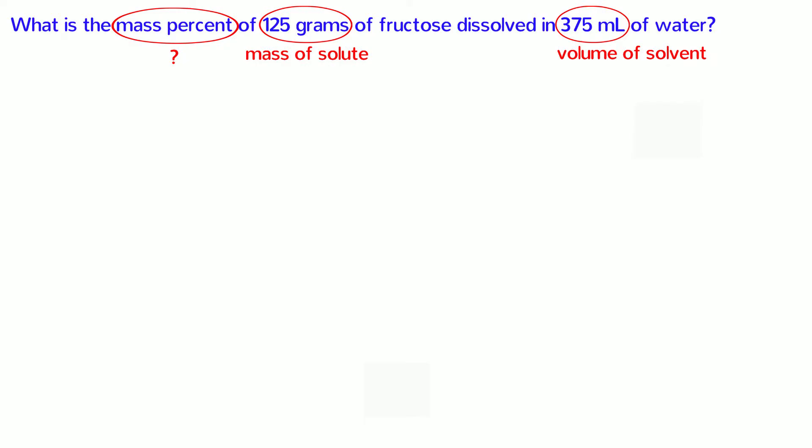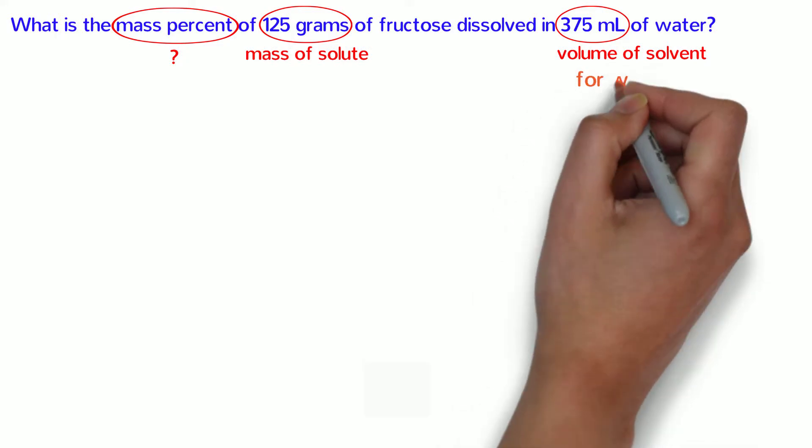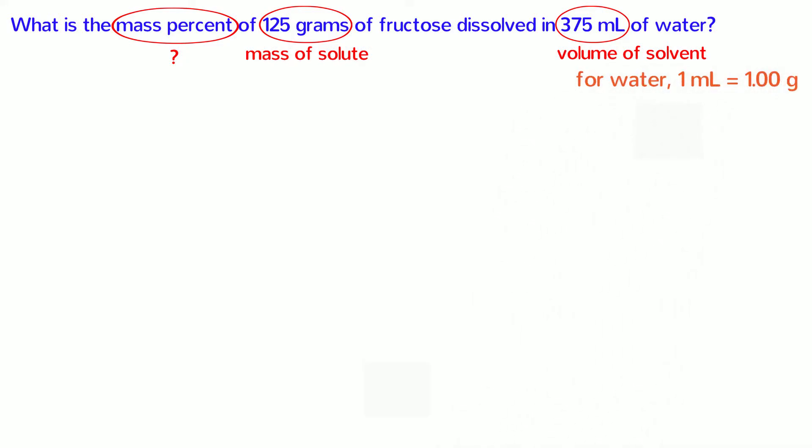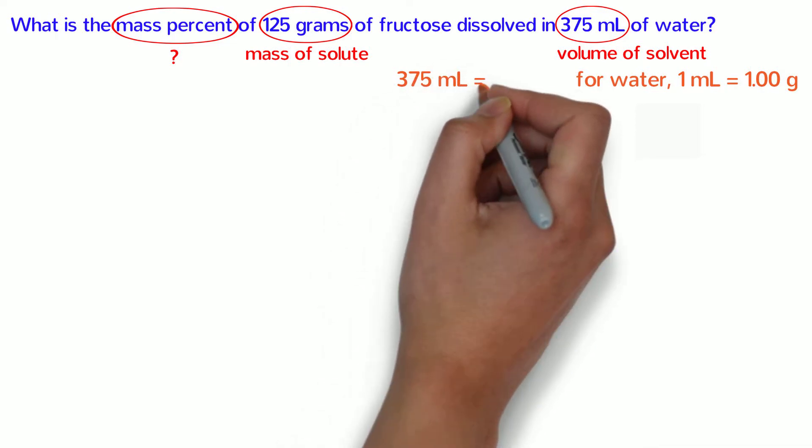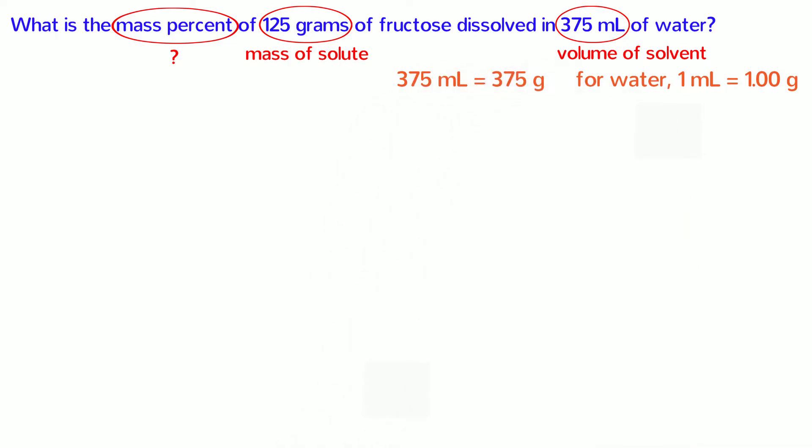Water is a solvent, so this is relatively simple because the density of water is approximately 1 gram per milliliter at room temperature. So, for water, 1 milliliter has a mass of 1 gram. That means that 375 milliliters is the same as 375 grams. As long as we don't need any more than 3 significant figures, and as long as the water is not too warm, this approximation works fine. If we did need more precision, we would have to calculate the mass of the solvent based on its density at the given temperature.